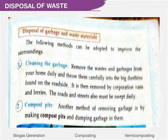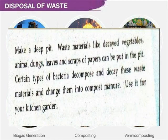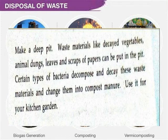Method 2: Compost pit. Make a deep pit and dump garbage in it. Waste materials like decayed vegetables, animal dung, leaves, and scraps of paper can be put in the pit. Certain types of bacteria decompose and decay this waste material, turning it into compost manure useful for your kitchen garden.